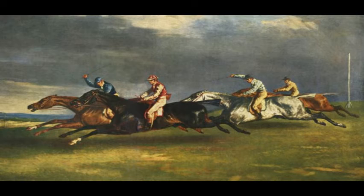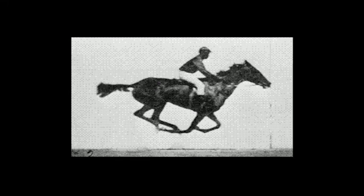There was a famous businessman and horse racer in California who had taken a position on this matter and was involved in debate about how exactly the horse's legs behave during a run. In order to settle the question, he hired this photographer named Edward Muybridge — spelled M-U-Y-B-R-I-D-G-E, but pronounced Muybridge, Edward Muybridge.